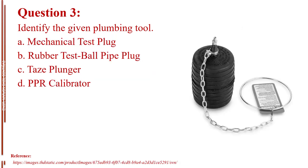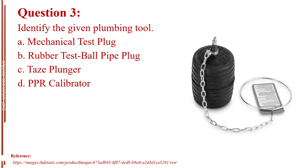Question number three. Identify the given plumbing tool. Letter A, mechanical test plug. Letter B, rubber test ball pipe plug. Letter C, tase plunger. Letter D, PPR calibrator. The answer is Letter B, rubber test ball pipe plug.